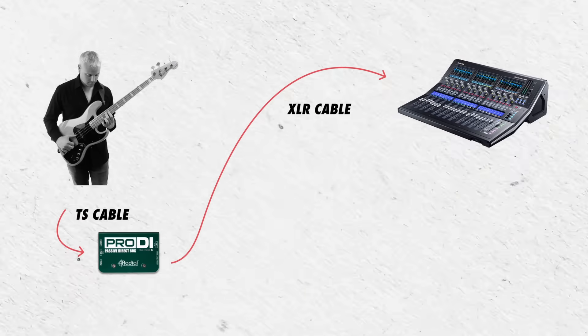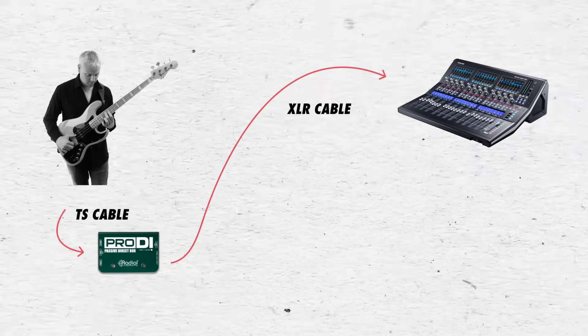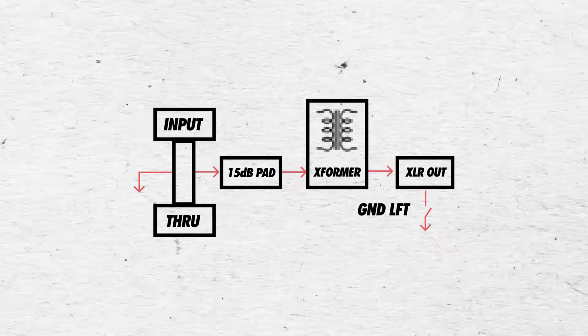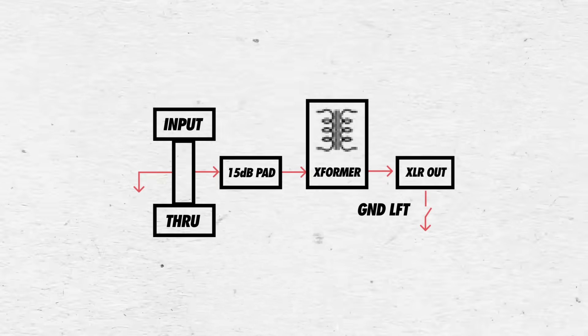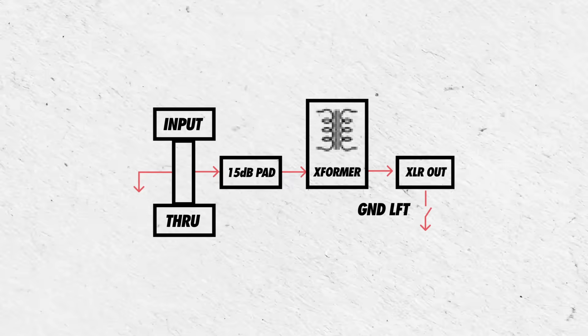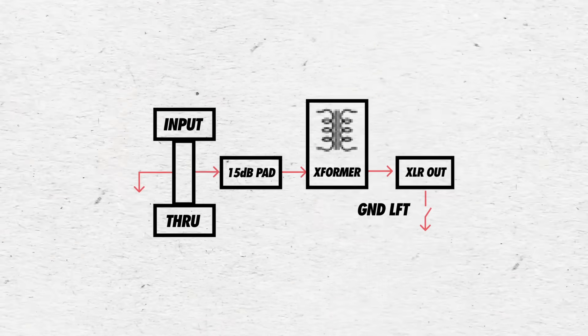There are magnetic fields all around us, and when those magnetic fields interact with either of these conductors, it creates a difference between them, which could result in audible noise. Using a DI box and an XLR cable, we go from an unbalanced connection to a balanced connection. Inside a passive DI box, there's a transformer that will take the signal from our unbalanced TS instrument cable and send it to the mixer over a balanced XLR connection.